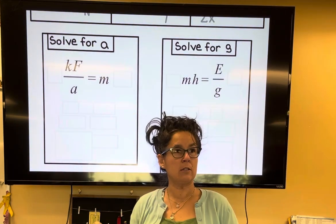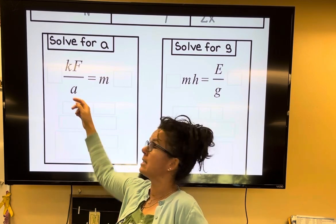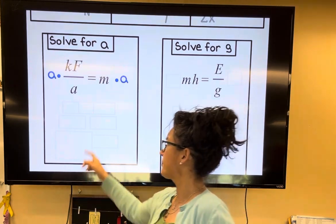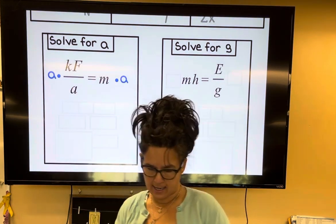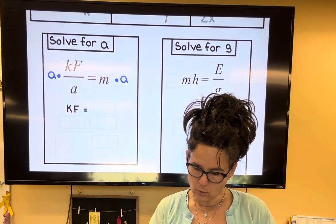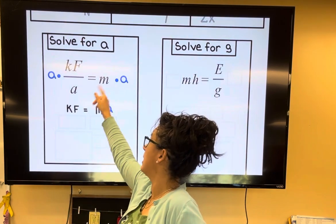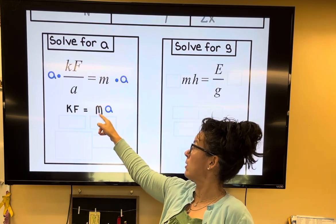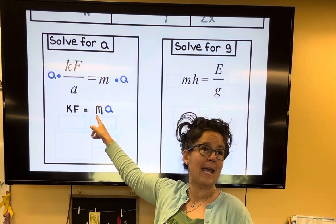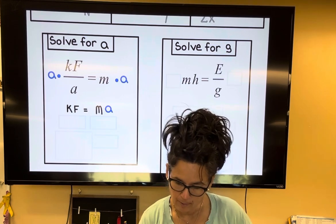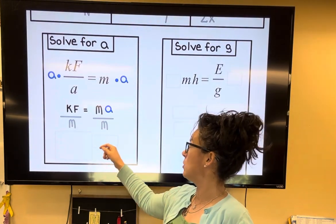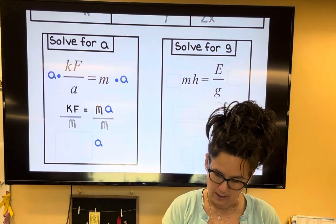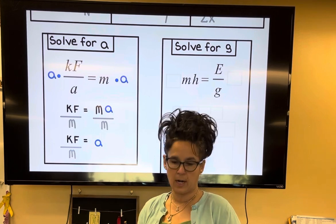I've got a fraction, so I immediately multiply both sides by any denominators — I'm going to multiply both sides by a. This a gets rid of that a, so I have kf equals, and on the right side, I have m times a. I'm trying to solve for a, and a is getting multiplied by m. So the opposite of multiplying by m is dividing by m. What I do to one side, I do to the other — the m's cancel, a is by itself, and the answer is k times f over m.